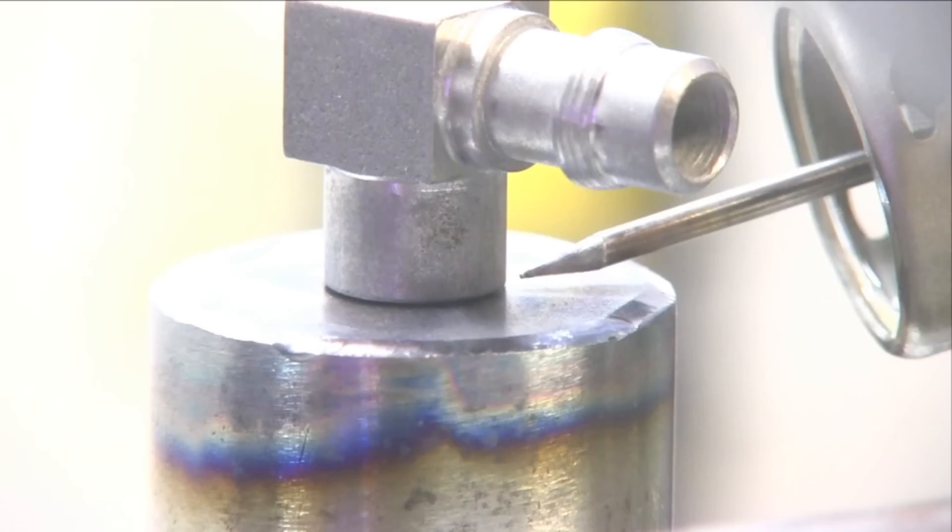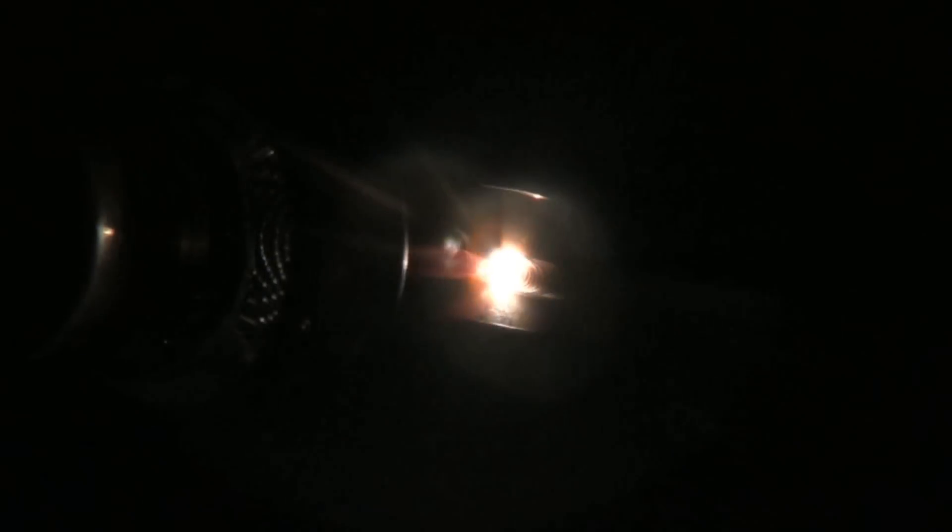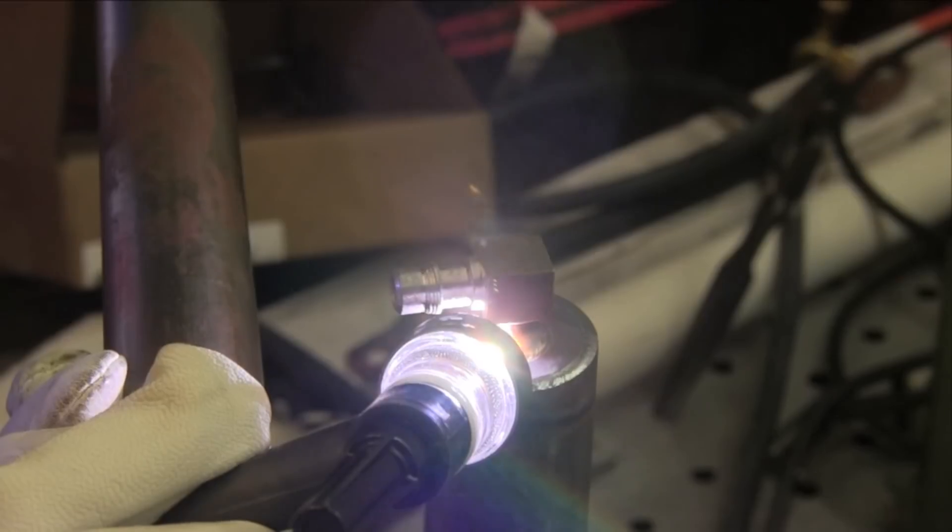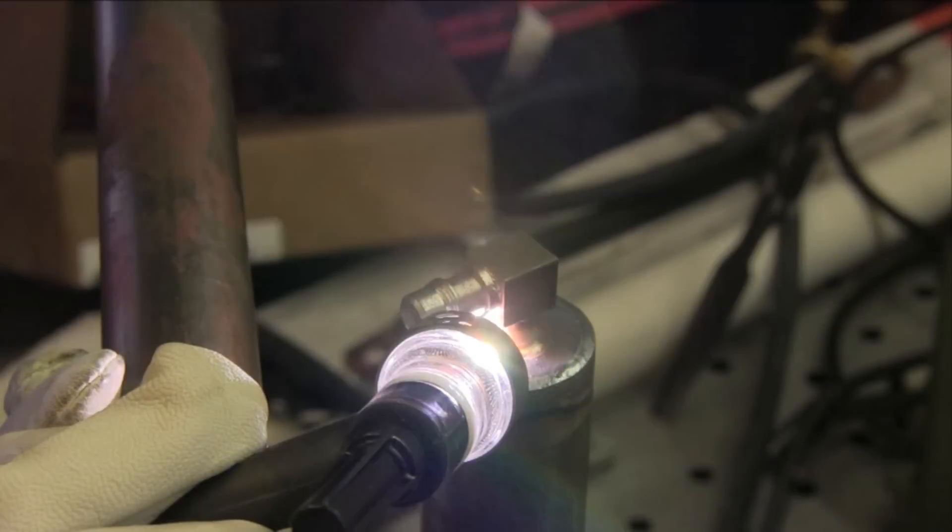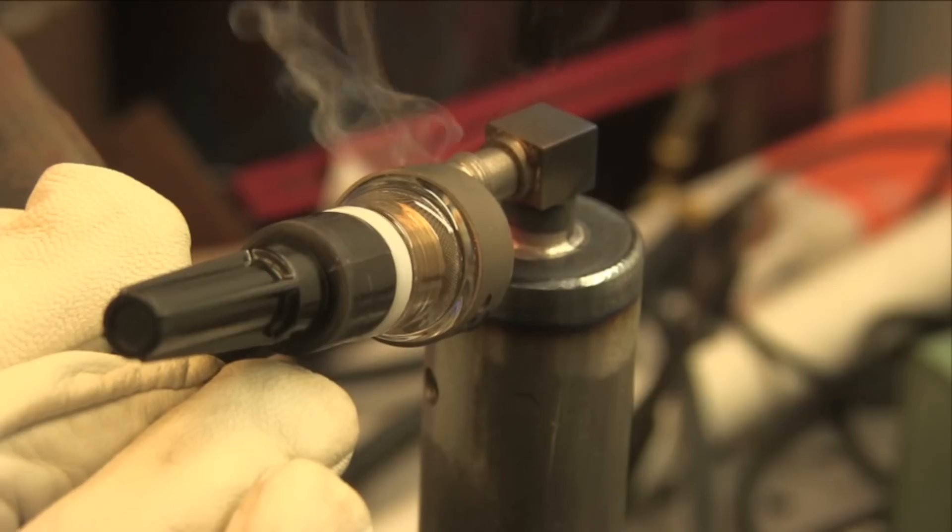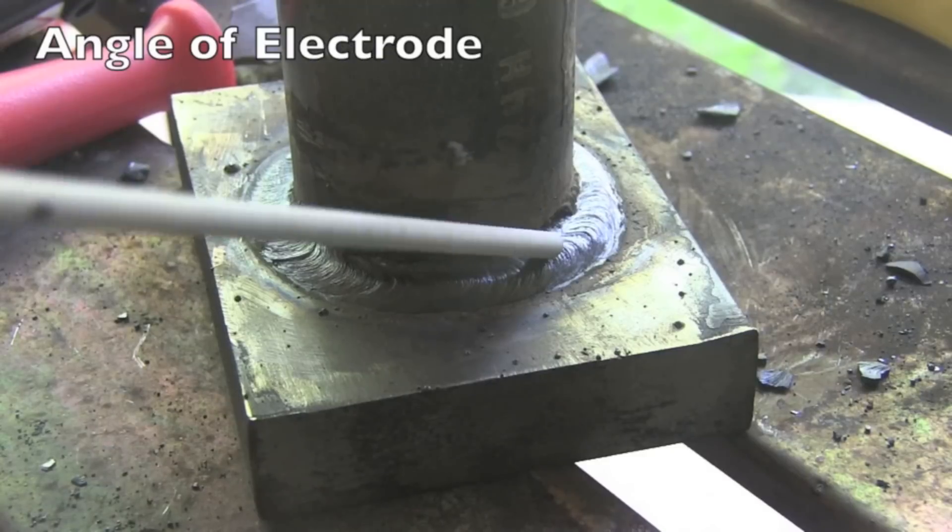This is a motorcycle filter, oil filter housing. And a requirement here is no melt through. So pulsing can help in this type of scenario. This is two pulses a second. Background current set to about 20%. Pulse time on set to about 20%. Really limits penetration. And that's the key here because there's a seal that goes on the other side there.